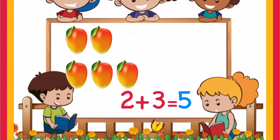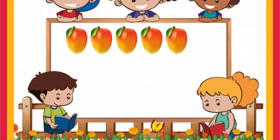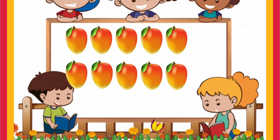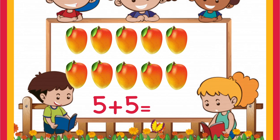Let's go to the next one. You have one, two, three, four, five mangoes and your mom gives you another five mangoes. So here the addition you are going to do is five plus five, which means you have five mangoes and you are going to add another five. Let's count how many total mangoes there are with you: one, two, three, four, five, six, seven, eight, nine, ten. So the answer is ten.